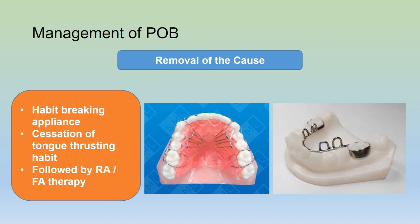How do we manage a posterior open bite? Again, if there is an obvious cause, removal of the cause is one way of managing the posterior open bite. We can use a habit-breaking appliance to induce stoppage of the tongue thrusting habit. Once the habit has been stopped, it can be followed by removable or fixed appliance therapy. As seen in the diagram, for posterior open bite the spurs are at the buccal area near the premolars, unlike in anterior open bite where the spurs are in the front portion of the appliance.